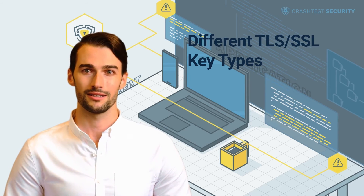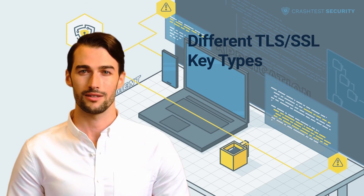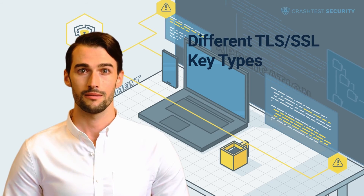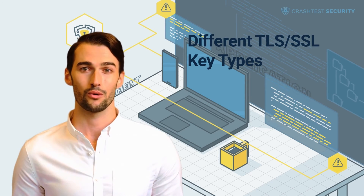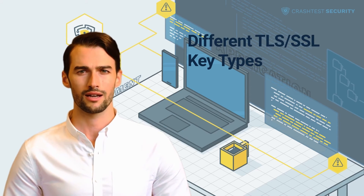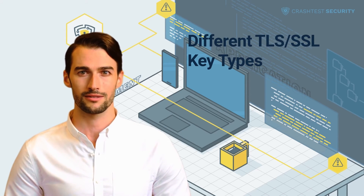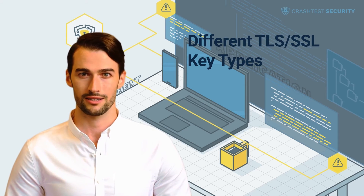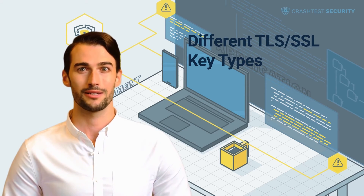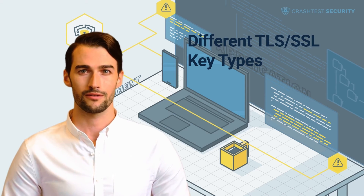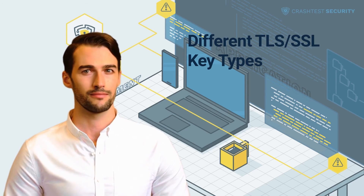ECDSA is a different key type that is not so massively used, but has its benefits and is adopted by more and more organizations. For example, it performs quicker than RSA for SSL/TLS signing and handshakes. The same level of key strength for an ECDSA key compared to an RSA key is obtained through a smaller key size, with 256 bits being the industry standard.